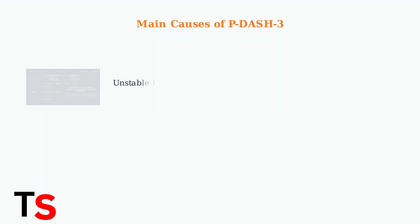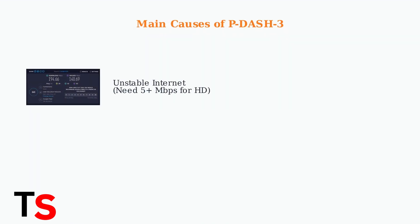The primary cause is unstable or slow internet connections. You need at least 5 megabits per second for HD streaming. Even users with high-speed connections, like this 194-megabit speed test, can experience issues if the connection is unstable.